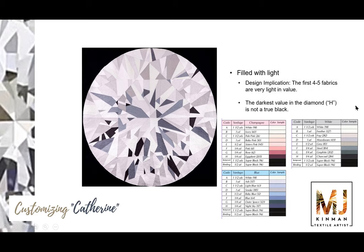The darkest value in the diamond, fabric code H, is not a true black. The last two little lines say 'super black' — that is for the background and the binding. But H is actually assigned to a series of facets within the gemstone. So in the champagne colorway, it's an eggplant color. Within the white diamond, it's a charcoal color, not a pure black. And within the blue Catherine, it is a night sky — a deep dark blue, not a black, but a nice deep dark blue.